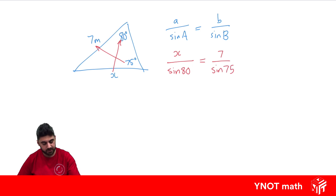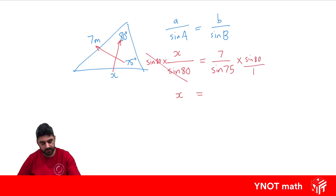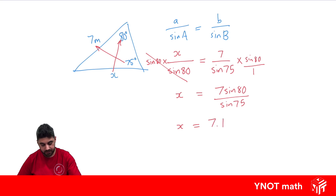We can do a bit of algebra to solve for x. Multiply both sides by sine 80 — the sine 80s cancel on the left, leaving x equals 7 times sine 80 over sine 75. Putting that all in the calculator gives us 7.1 meters to one decimal place.